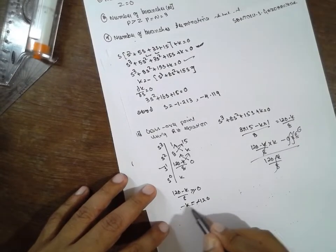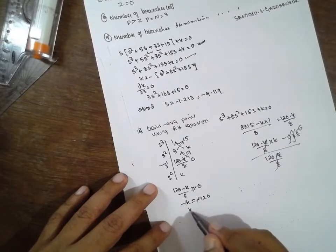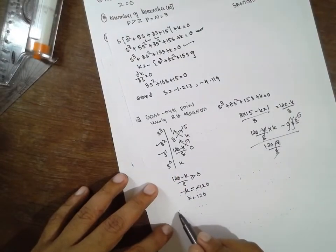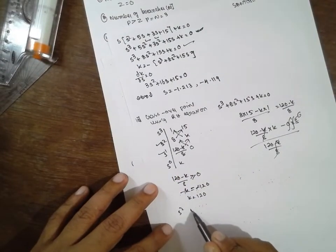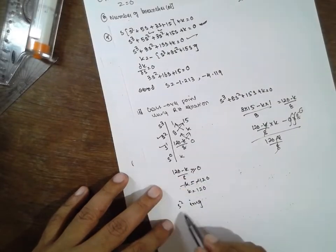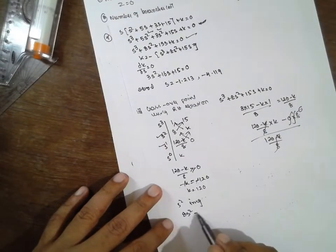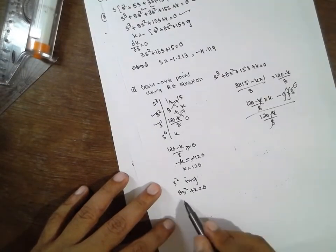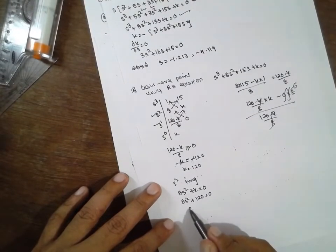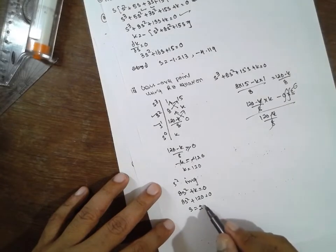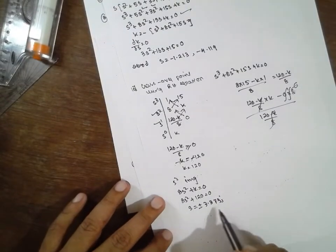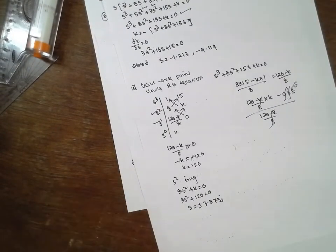Using the imaginary axis crossing: from the square-term row of the Routh table, 8s² + K = 0. Substituting K = 120: 8s² + 120 = 0, giving s = ±√(−15) = ±3.873j. So the imaginary axis crossover is at s = ±3.873j.